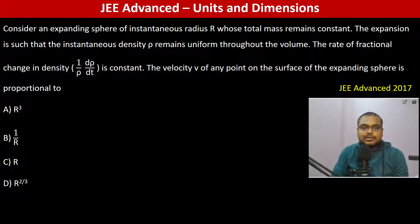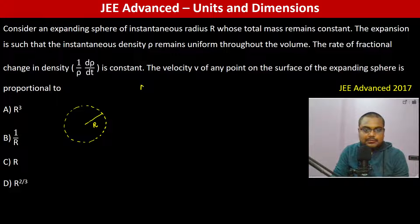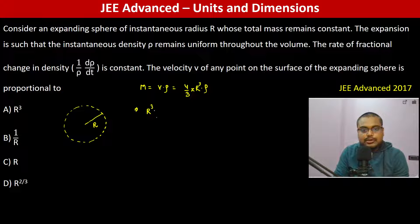Consider an expanding sphere of instantaneous radius r, whose total mass remains constant. Mass of a sphere is volume times density, so this is 4/3 π r³ ρ. Since this is constant, we can write r³ ρ is actually constant, which is equal to 3m divided by 4π, which is constant.